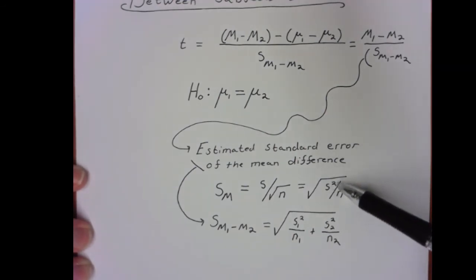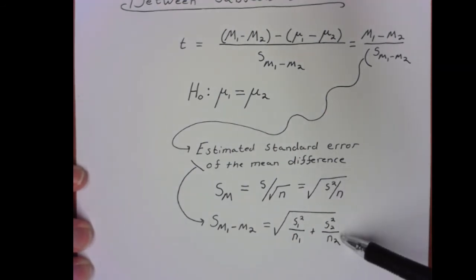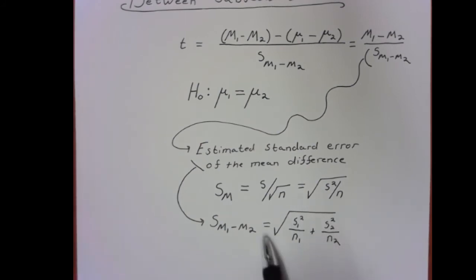So really, when you look at that, we just have two standard errors added together, which makes sense. We need to add up how far apart we would expect these two things to be, which is represented by each of its standard errors. So that's really what we're doing.